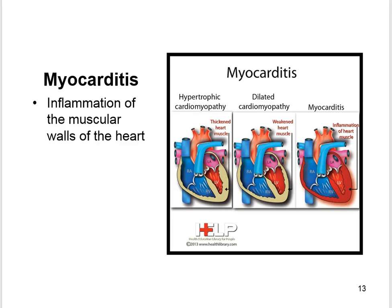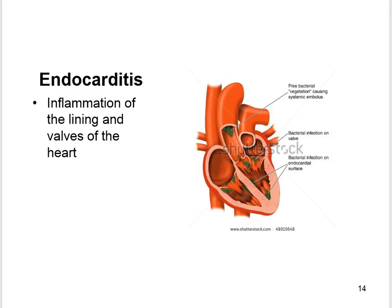Myocarditis is the inflammation of the muscular walls of the heart. Endocarditis is the inflammation of the lining and valves of the heart. Bacteria can cause vegetations — abnormal growths of tissue surrounding a valve — composed of platelets, bacteria, and fibrin. Vegetations are friable, meaning they are easily disintegrated.